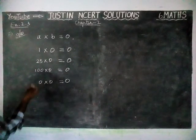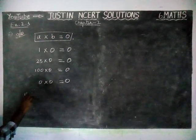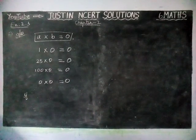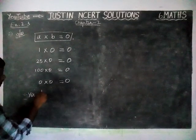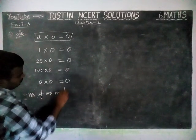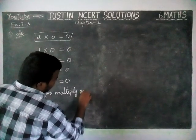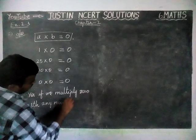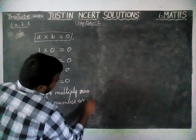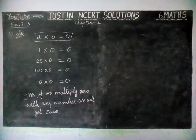So, these are all the examples. Now, we are going to justify the answer. If the product of two whole numbers is 0, can we say that one or both of them will be 0? Yes, the answer is yes. If we multiply 0 with any number, we will get 0. Thank you.